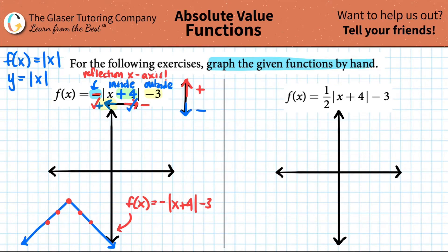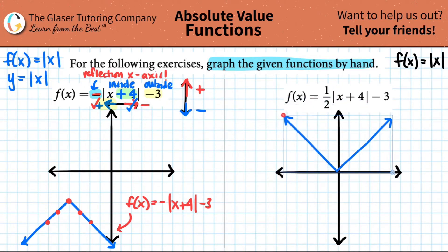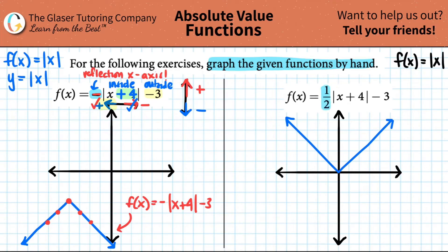One more — same idea. This is f(x) = one half times the absolute value of x plus 4, minus 3. You always start with the simplest graph: the V, which is just |x|, with points (1,1), (2,2), (3,3) and their opposites. Now note the differences: I have one half in front, a plus four inside, and a minus three outside.